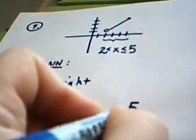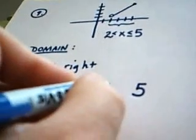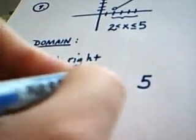2 is the left marker, 5 is the right marker, x is in between, so you're kind of going to sandwich this.